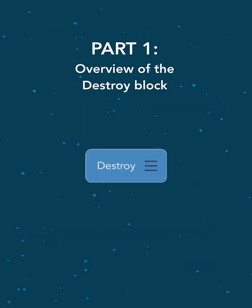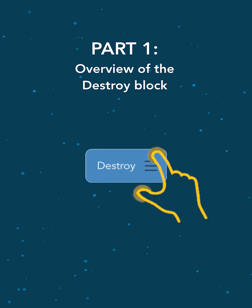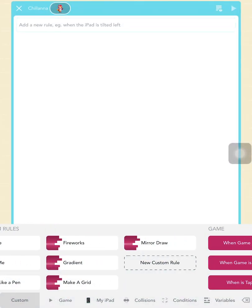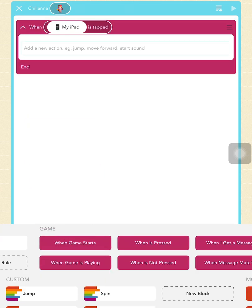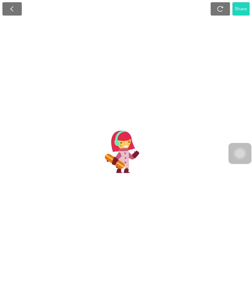Part 1: Overview of the destroy block. This part is a demonstration, so you don't need to code along here yet. You can pinch on the video to make it bigger and watch along. The destroy block will delete an object. I'll add it to an object to demonstrate — I'll add a when iPad is tapped rule and add a destroy block. Now I'll play the project. When I tap my iPad, Chelana disappears. A destroyed object will no longer exist in the game and will no longer run any code.